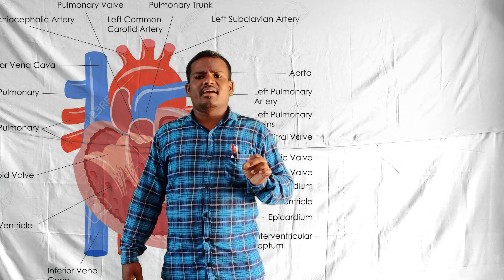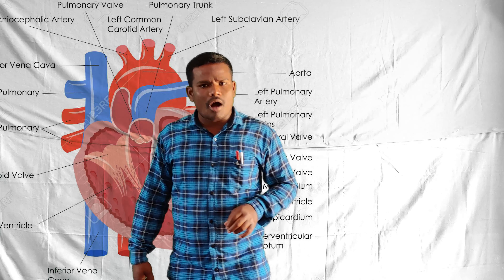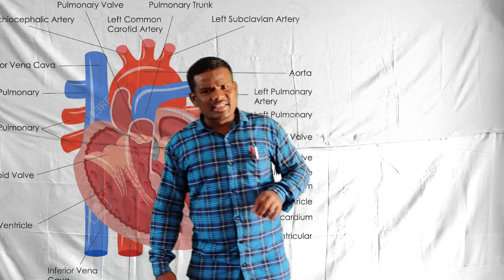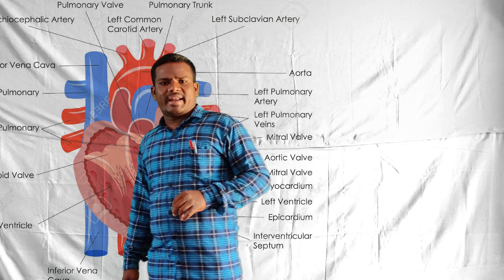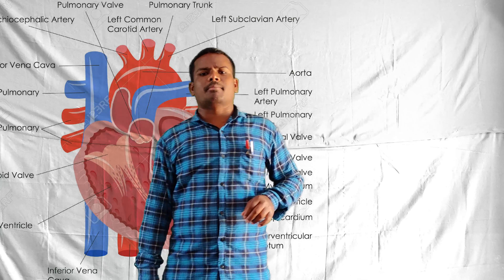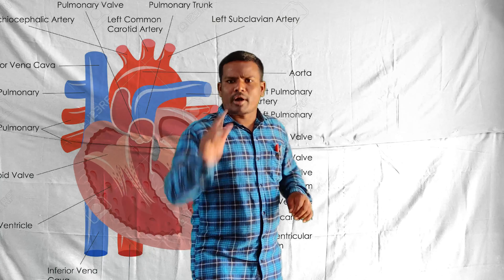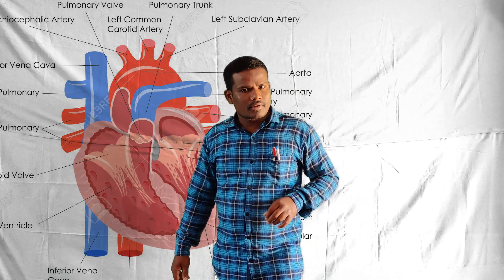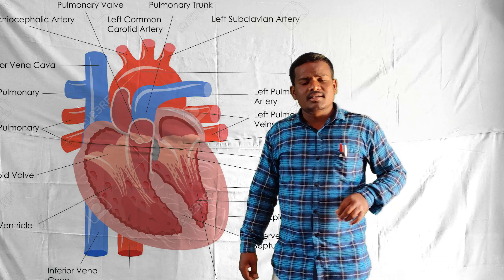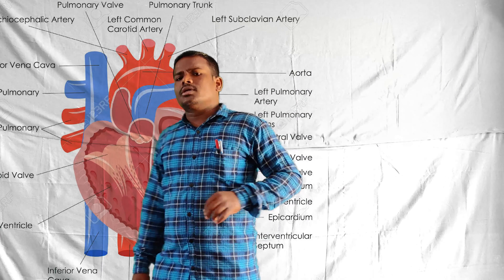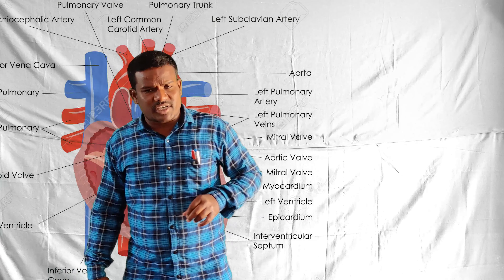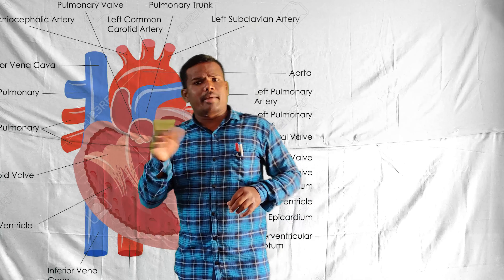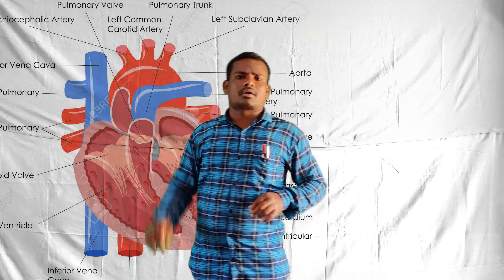The function of arteries: they originate from the heart and supply blood by pumping it to every part of our body from the heart. The second one is veins - what is their function? Veins carry blood from all the body parts and supply it to the heart.